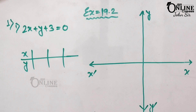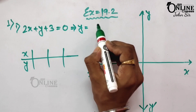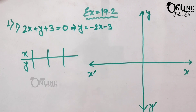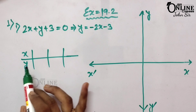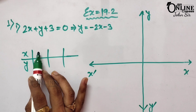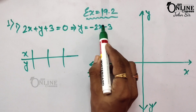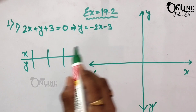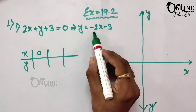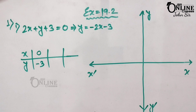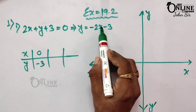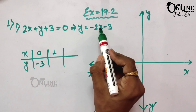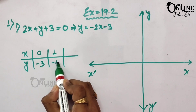From 2x + y + 3 = 0 you can write y = -2x - 3. Now you have to find three coordinates to draw the line. Since y depends on x, if x = 0 then y = -3. Next, if x = 1 then y = -2(1) - 3 = -5.